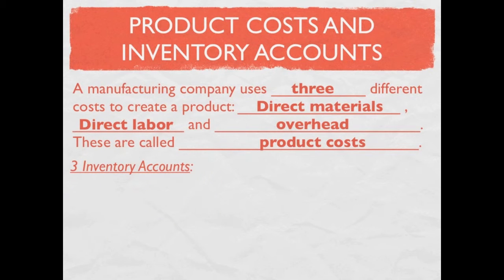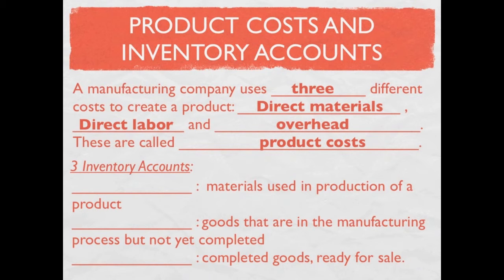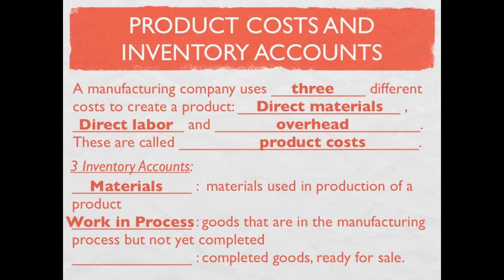In a manufacturing company we do not have one single inventory account — we have three inventory accounts. The first is called materials, where all materials used in production are contained. The second is called work in process, where goods that are in the manufacturing process but not yet completed are located. Once a good is completed it moves out of work in process into finished goods, where completed goods remain until they are sold.